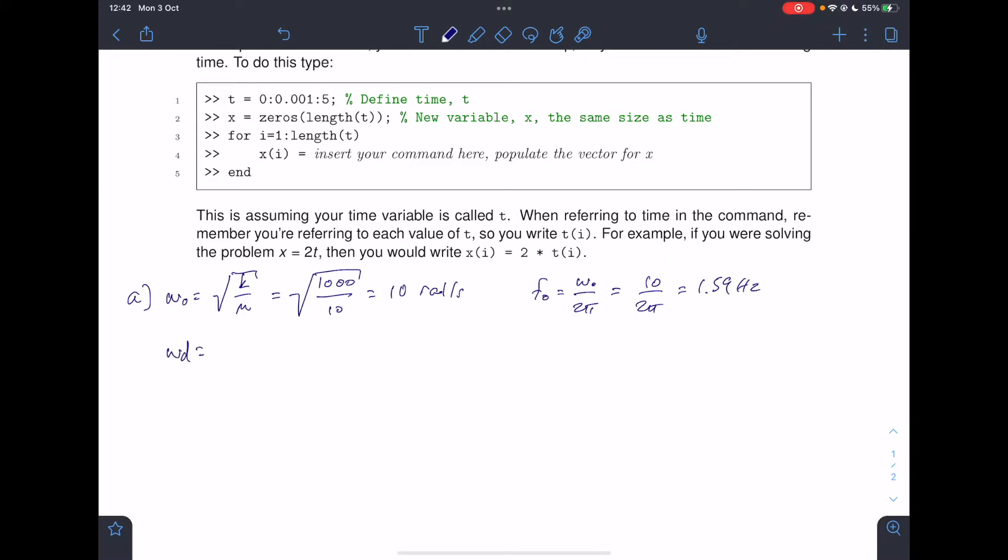And omega d is omega naught times the square root of 1 minus zeta squared. But we need to find zeta first.